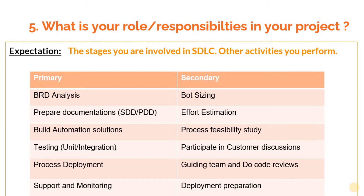Coming to the secondary roles: in every project, a senior might perform bot sizing — that is, estimating the number of bots to be used by a process based on its volume and processing time. Then, effort estimation — that is, the duration to complete the process — which may come from both testing as well as development. In some cases, you might have to do a process feasibility study to identify if a process is suitable for automation and can be automated technically.